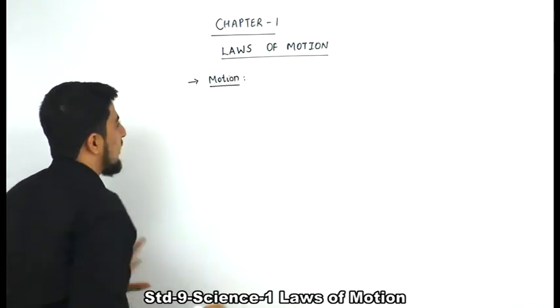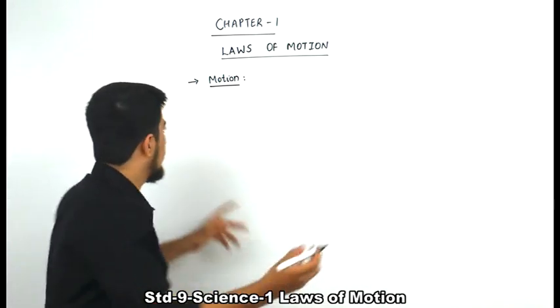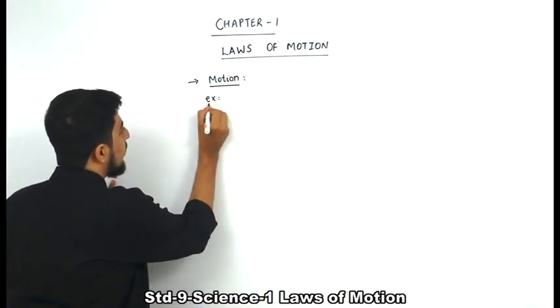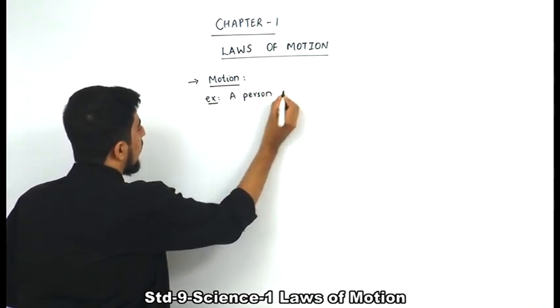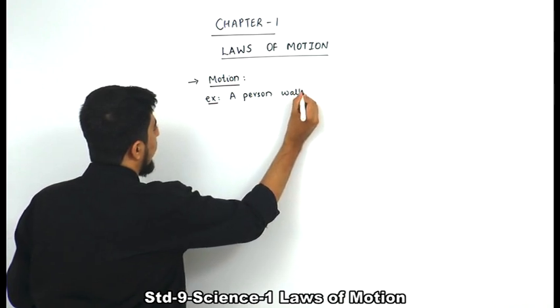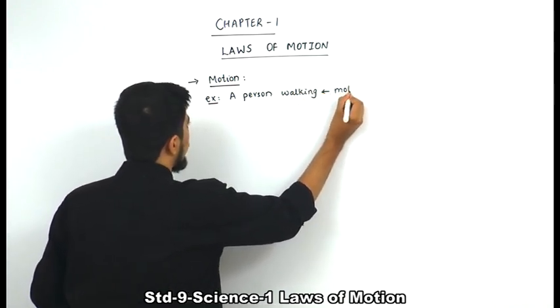For example, if a person is walking, can I say he is in motion? Yes. A person walking - this is an example of motion. This means he is in motion. The person is in motion.